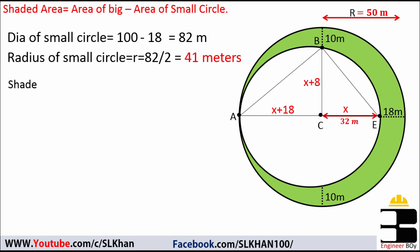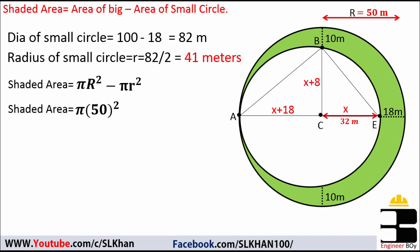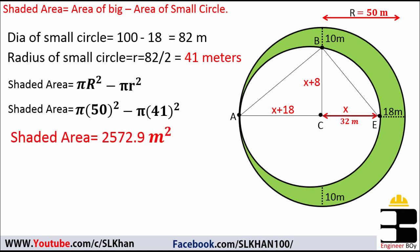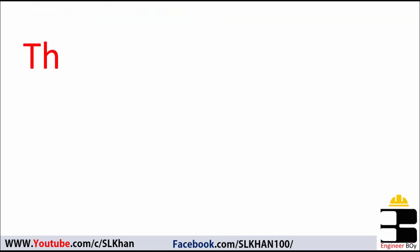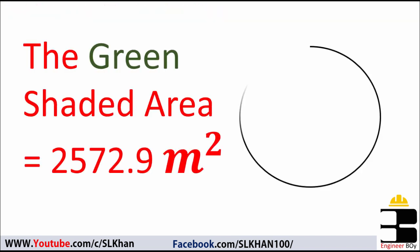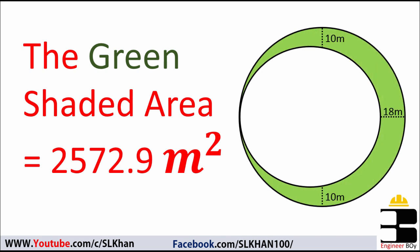Coming back to our approach: the shaded area must be pi times capital R squared — that's the big circle — minus pi times small r squared, which is the area of the small circle. Plugging in the values: shaded area = π(50²) minus π(41²), which gives us 2572.9 square meters. So the green shaded area must be 2572.9 square meters.